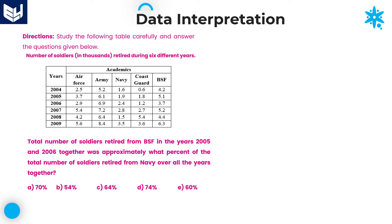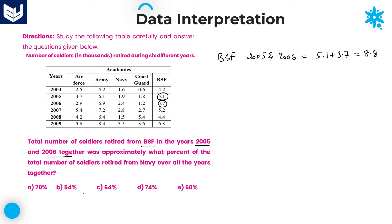Let us look at the next question. Total number of soldiers retired from BSF in years 2005 and 2006 together: that is 5.1 plus 3.7, which equals 8.8 thousands. We need to calculate what percent this is of the total soldiers retired from Navy over all years together.